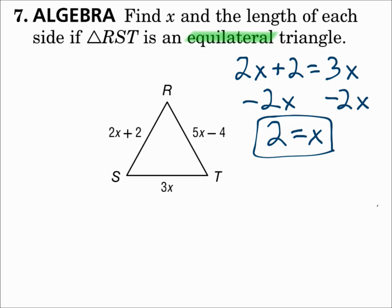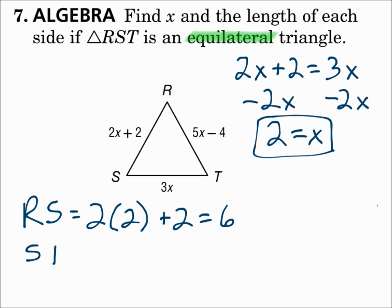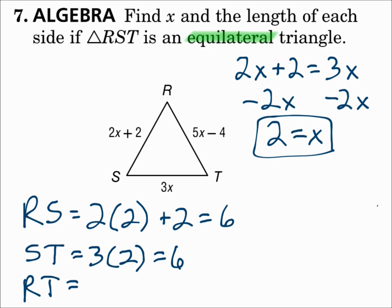Then find the length of each side by substituting x = 2. For RS, which is 2x + 2, it's 2(2) + 2 = 6. For segment ST, it's 3x = 3(2) = 6. And for segment RT, 5x − 4 = 5(2) − 4 = 6. They should all be the same because it's equilateral.